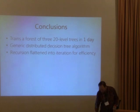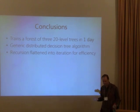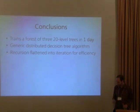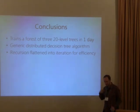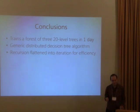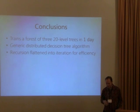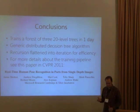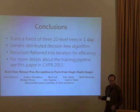To conclude: I've described a distributed parallel implementation of decision tree training capable of training three 20-level trees on a million images in about a day. Our implementation and all the data types it uses are generic and could be adapted to other training exercises. The main idea is that to make this work in a big data setting, you flatten the recursive structure of training into iterative computation decomposed into multiple cluster jobs. For more details on the training pipeline, including how ground truth is obtained from motion capture data and how classified images are converted into skeletons, I encourage you to read the CVPR 2011 paper.